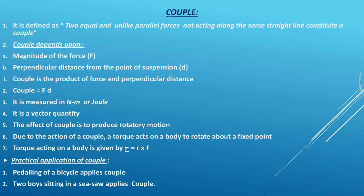At the same time, two boys sitting in a seesaw in a garden also apply a couple, where two equal but unlike parallel forces not acting along the same straight line constitute a couple. Here also, two forces are acting simultaneously upon a body to constitute a couple. Hence, for a couple to form, there must be two equal and unlike parallel forces not acting along the same straight line.